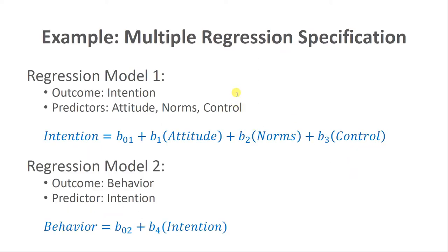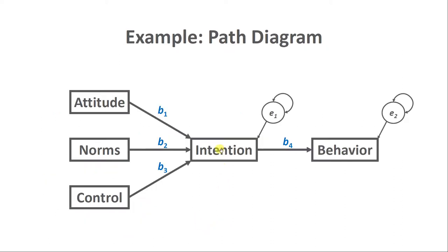If we did want to use basic multiple linear regression for this model, we'd specify one equation at a time. The first equation has intention as the outcome variable, with attitude, norms, and control as predictors — so we'd write our typical linear regression equation with an intercept and regression coefficients B1, B2, and B3 for each predictor. Then we'd estimate a second equation — in this case a simple linear regression — where behavior is predicted by intention, with intercept and regression coefficient B4 for intention.